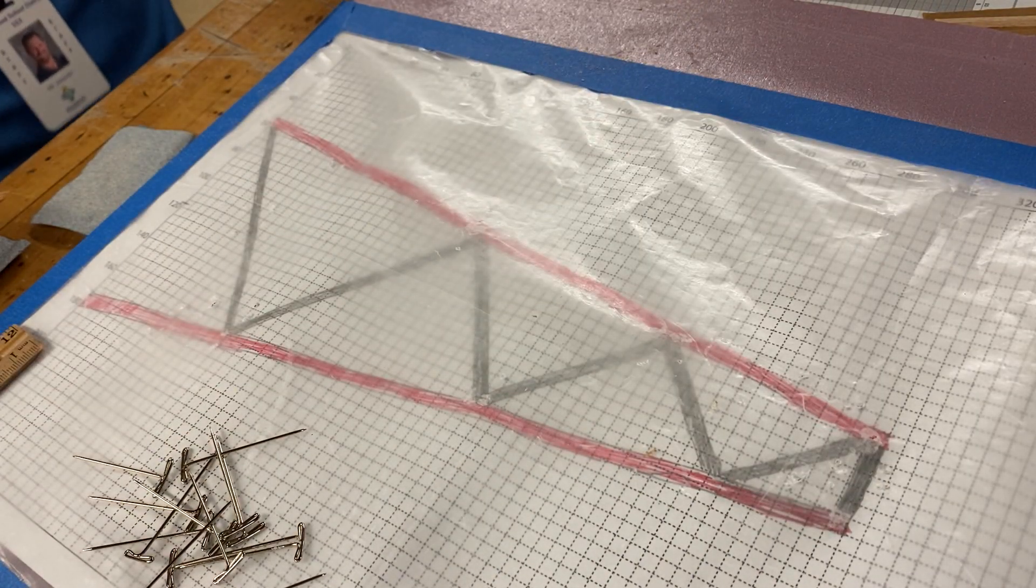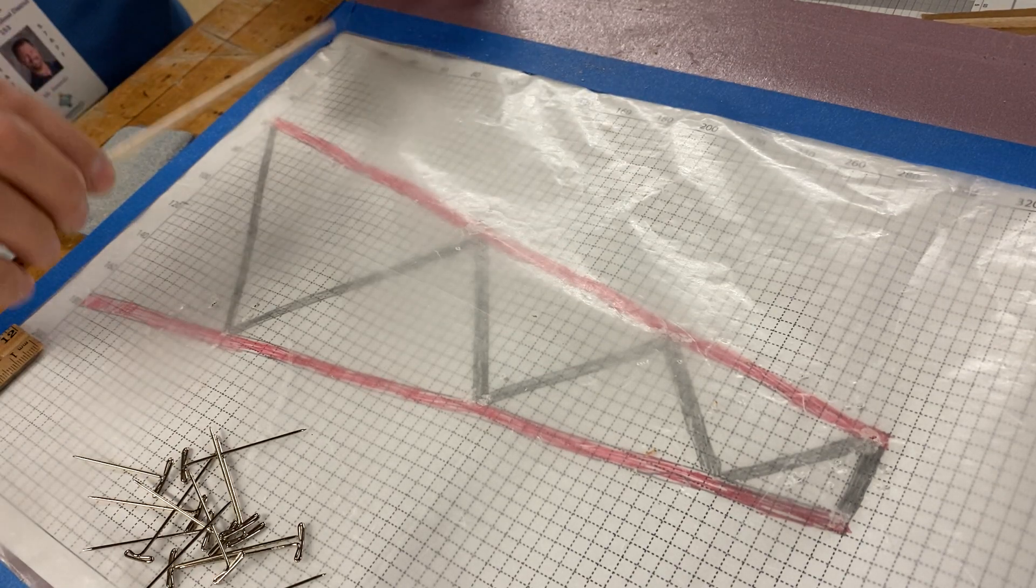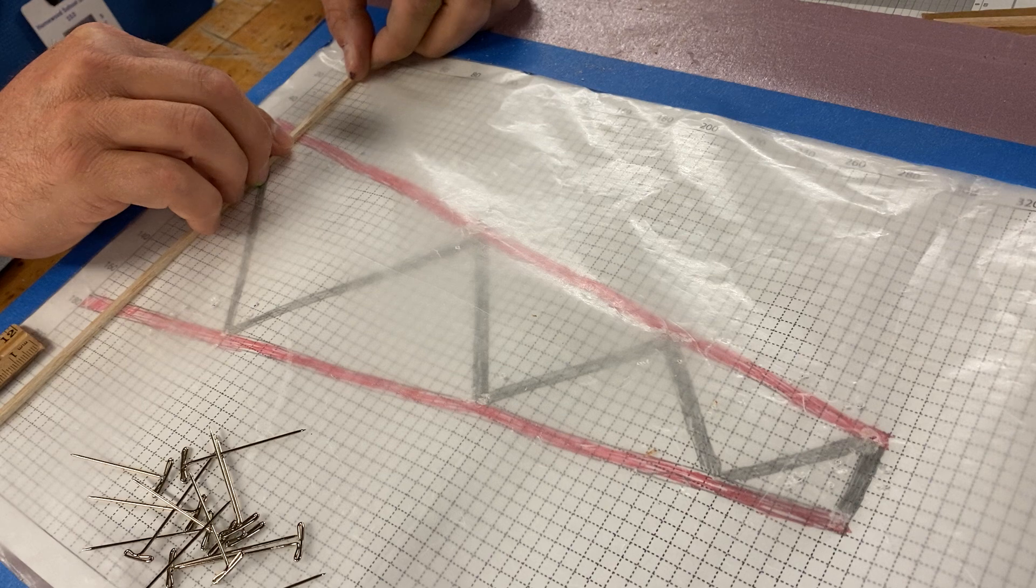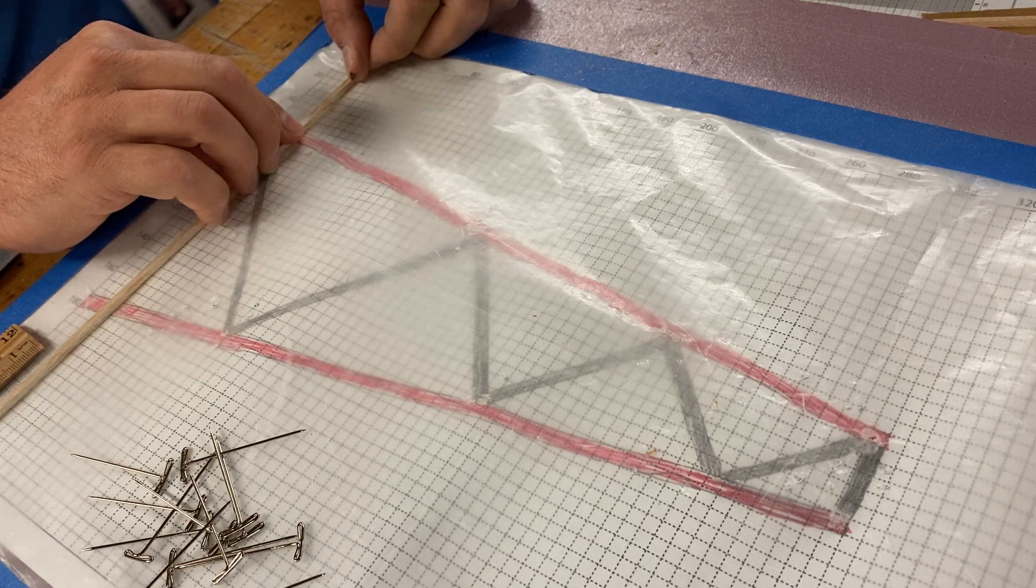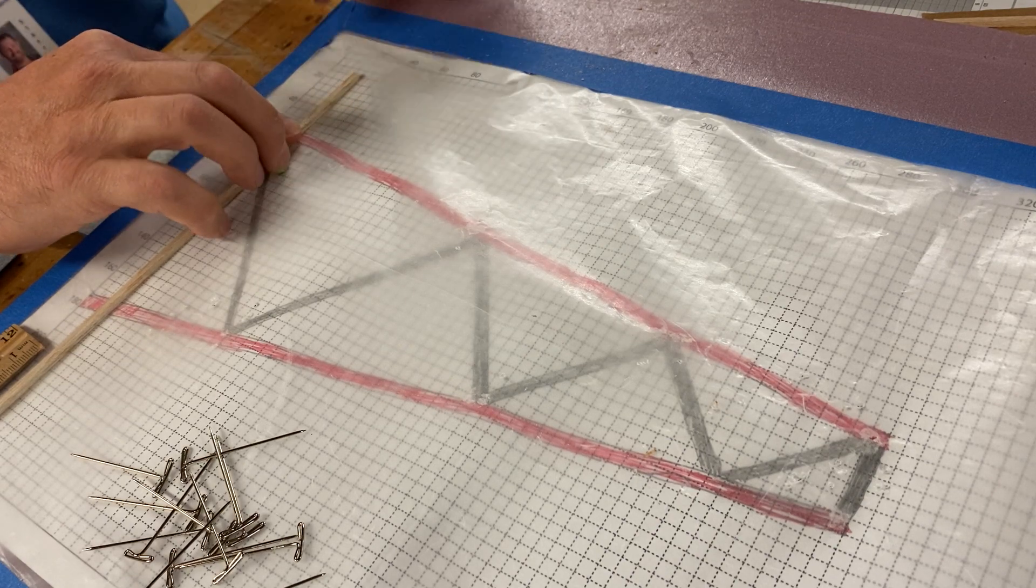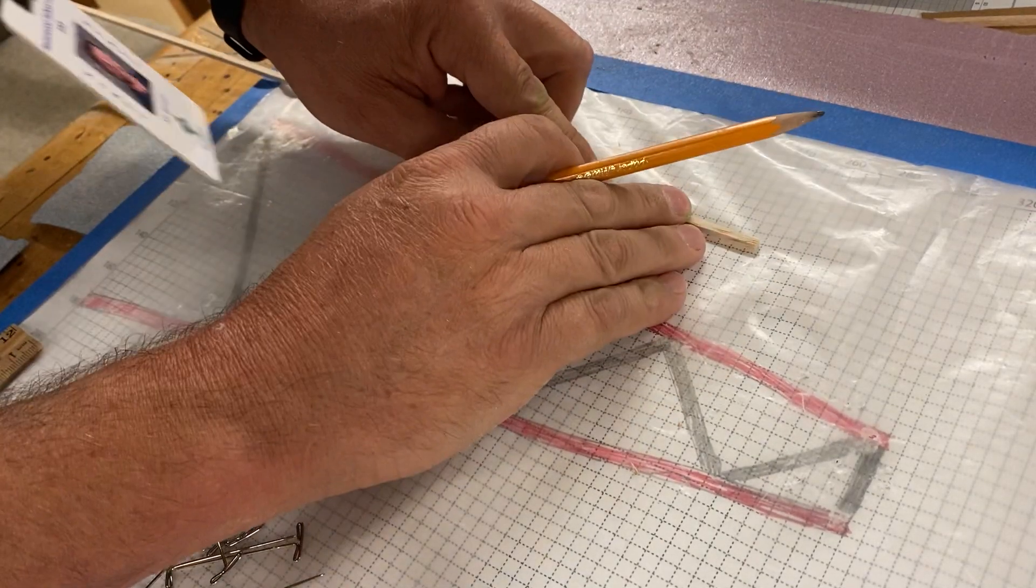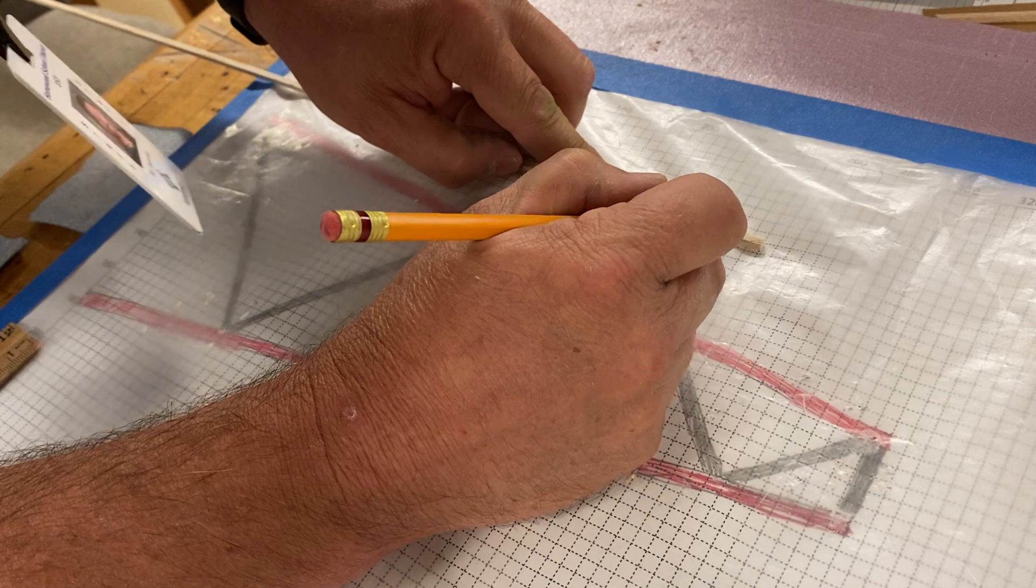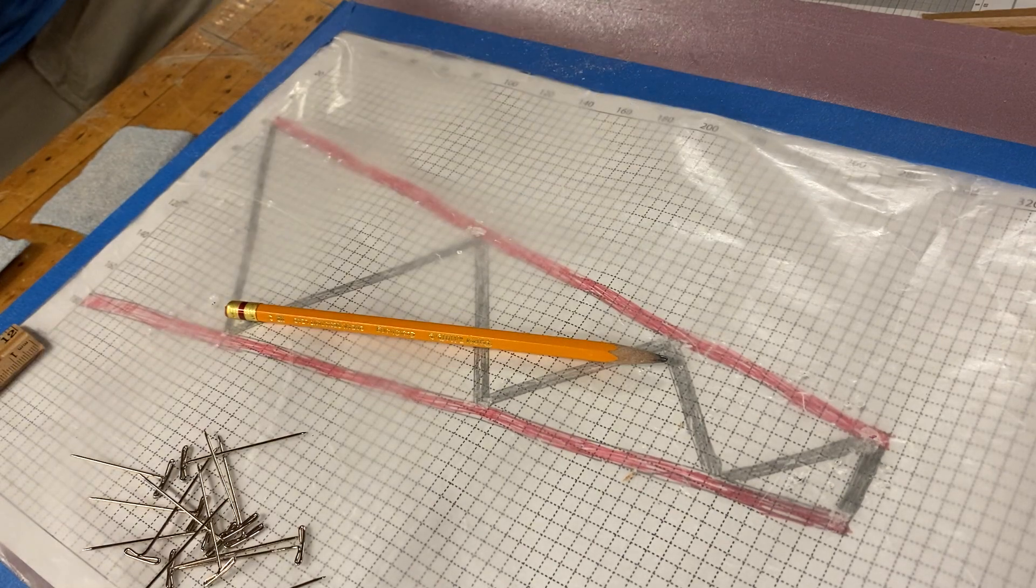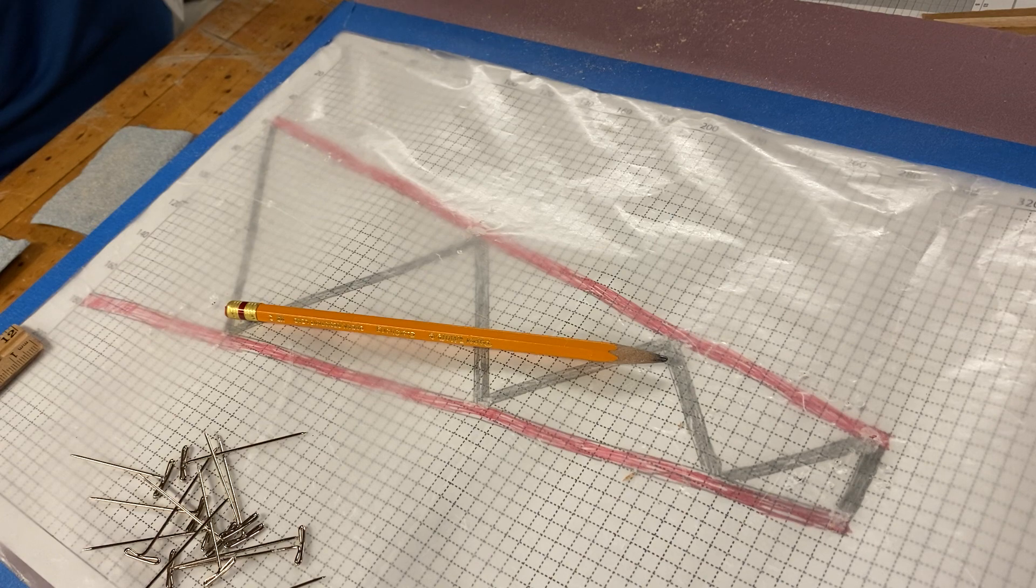All right. So the first thing we need to do is find it. Take one of these and put it. I want to make one of these balsa wood strips five squares. All right. So that's 25 millimeters. So five squares. So if you look, hopefully this appears on the camera. I'm going to put it down somewhere. I'm going to count one, two, three, four, five. And I'm going to draw a line. See that line?